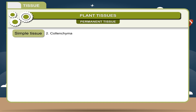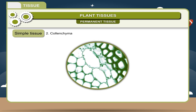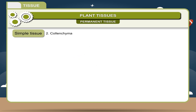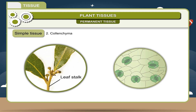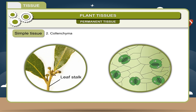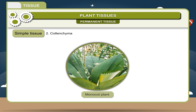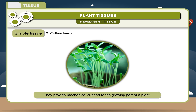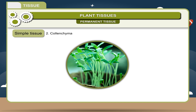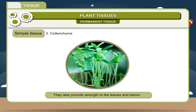2. Colenchyma. The cells of this tissue are living and thick at the corners. There are no intercellular spaces between the cells. Location: it is found in leaf stalks and epidermis of dicot stems, and is absent in monocot plants. Function: 1. They provide mechanical support to the growing part of a plant. 2. They also provide strength to the leaves and stems.